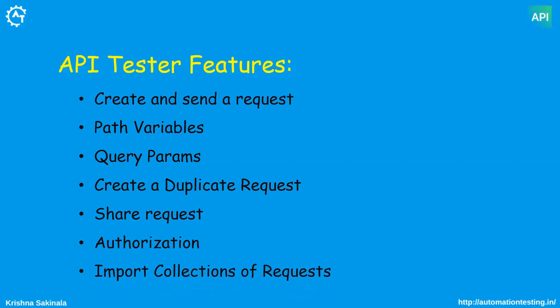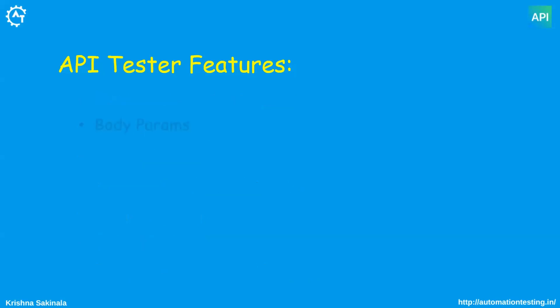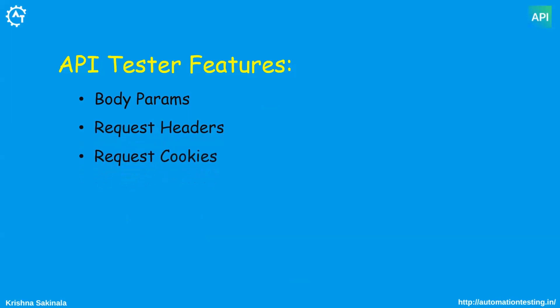You can import collections of requests — for example, if you already have requests in Postman, you can export them from Postman and import them into your mobile API Tester. You can also provide parameters in your request body, headers, and cookies, and there are settings you can configure for your request.